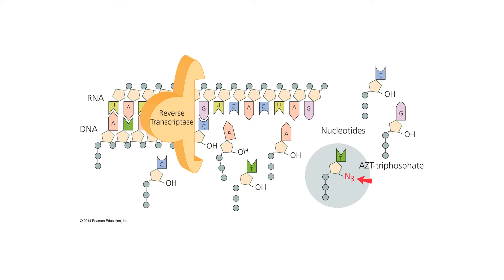A key enzyme in the process is reverse transcriptase. This enzyme reads RNA and, by base pairing, builds a corresponding complementary strand of DNA. We're also looking at the drug AZT here, which is a nucleotide analog. This inhibits chain elongation because there's no OH group at the 3' position for new nucleotides to attach to. So this drug inhibits viral replication by blocking chain elongation.